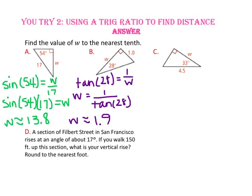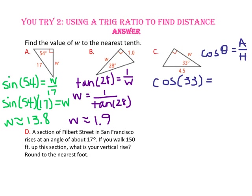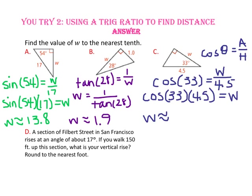In part C, we're looking for the length of the side adjacent to our given angle, and we know the length of the hypotenuse. Since cosine is adjacent over hypotenuse, let's use the cosine ratio. Substitute 33 degrees in for theta, W in for the adjacent side, and 4.5 in for the hypotenuse. Since the variable is in the numerator, we multiply, and W is approximately equal to 3.8.